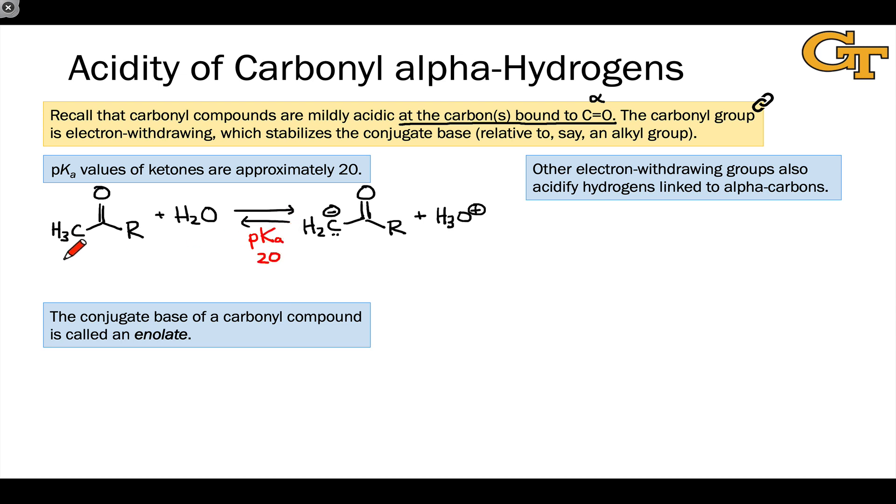So the alpha carbons of carbonyl compounds are more acidic than say terminal alkynes, which have a pKa of about 25, but less acidic than alcohols, which have pKa's around 15. And this 20 is a nice benchmark to know. A typical simple ketone has a pKa value of 20.